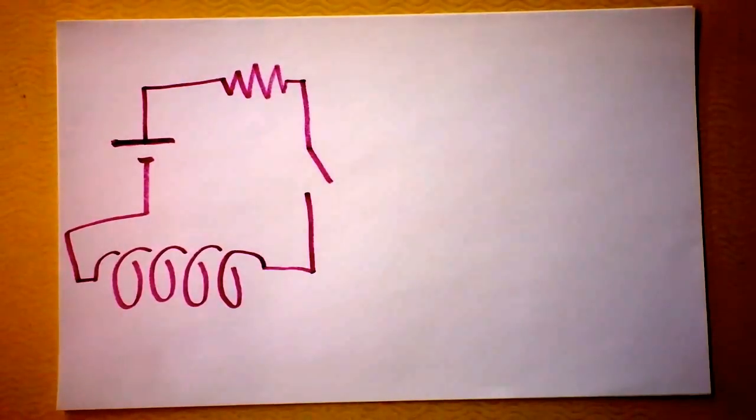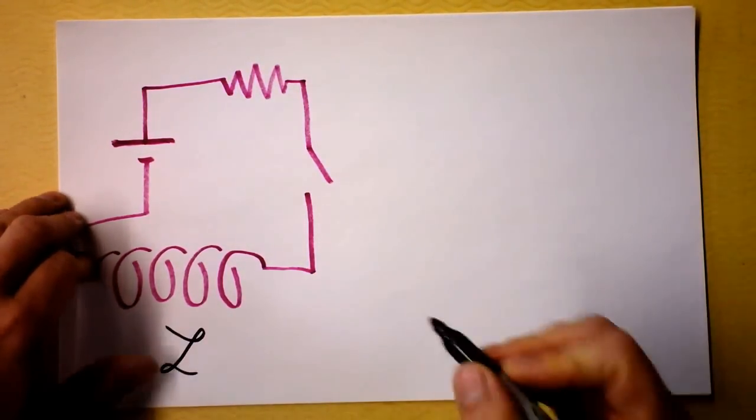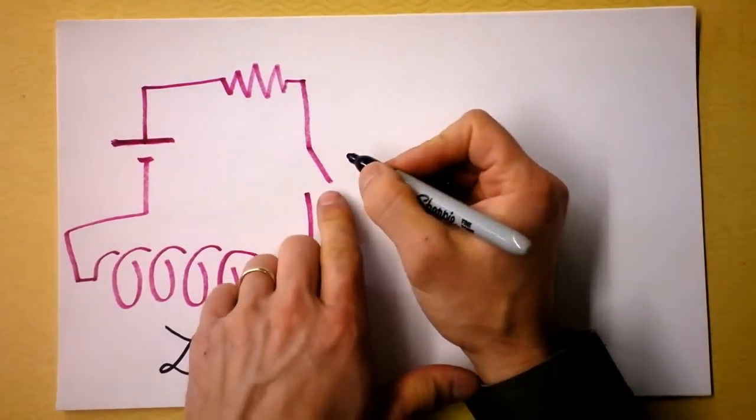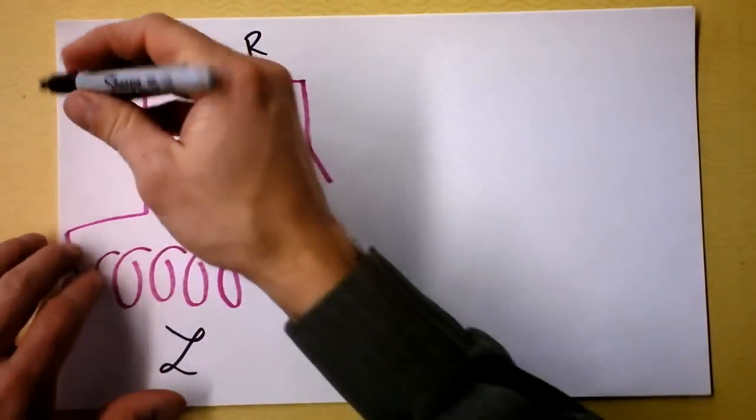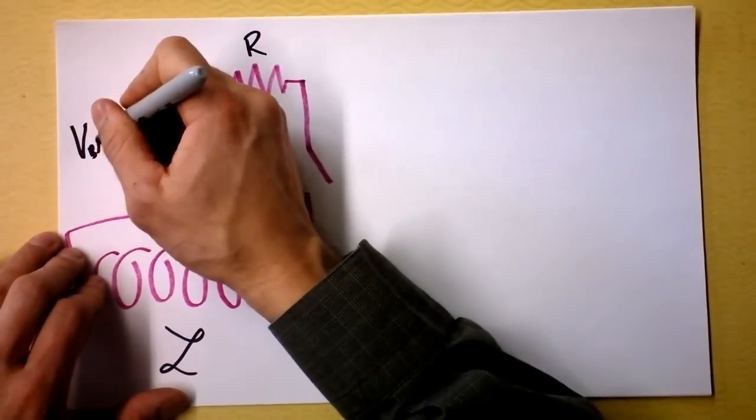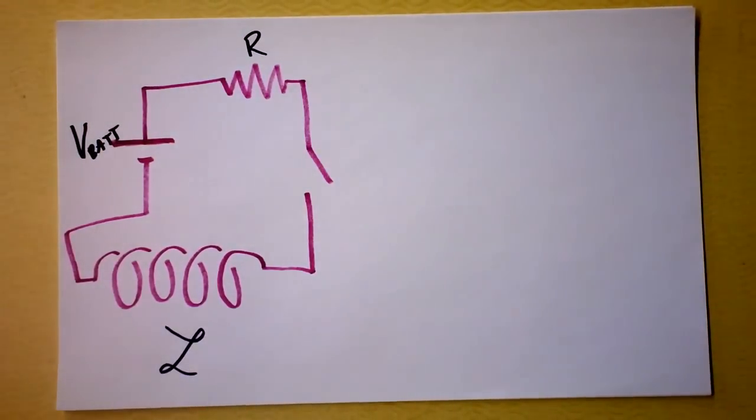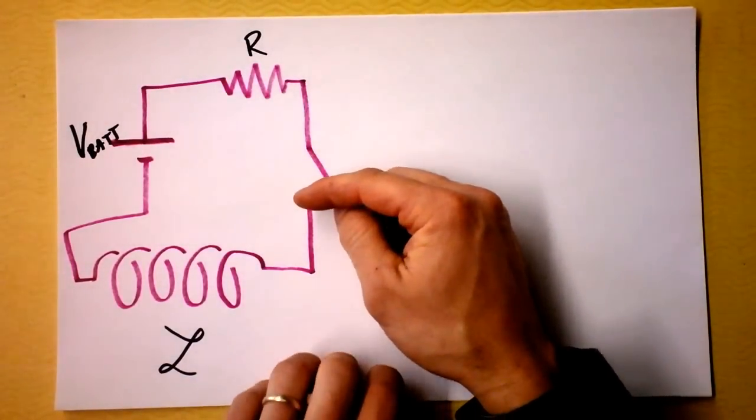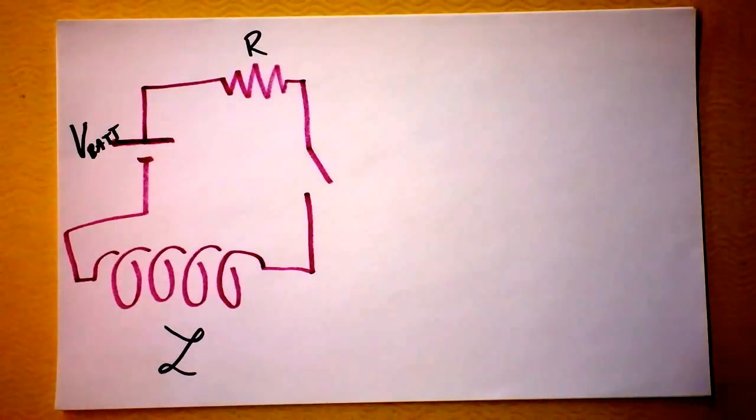This sucker right here is called an inductor, and I'm going to use a script L to represent inductance. This is a switch here, and this is a resistor with some resistance, and this is the voltage of my battery. So you see, what's going to happen is I will close this switch so that we can learn about inductance. That's right, I'm prepared to close the switch so that you can learn.